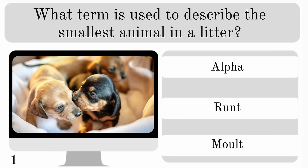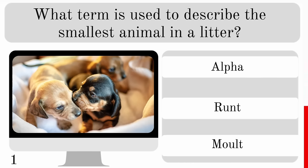What term is used to describe the smallest animal in a litter? Is it the Alpha, Runt or Malt? The correct answer here is Runt.